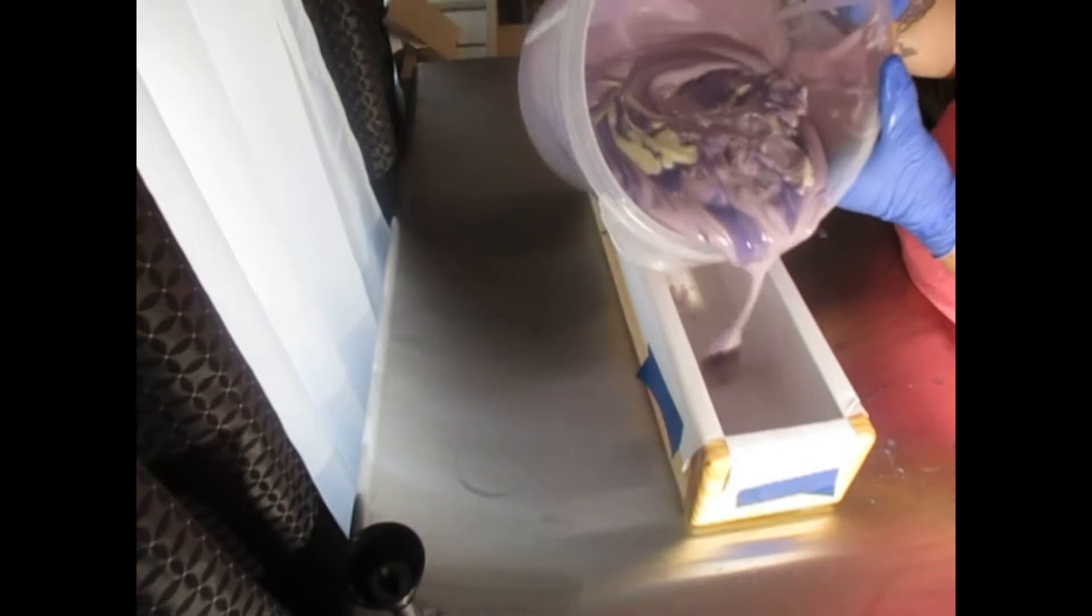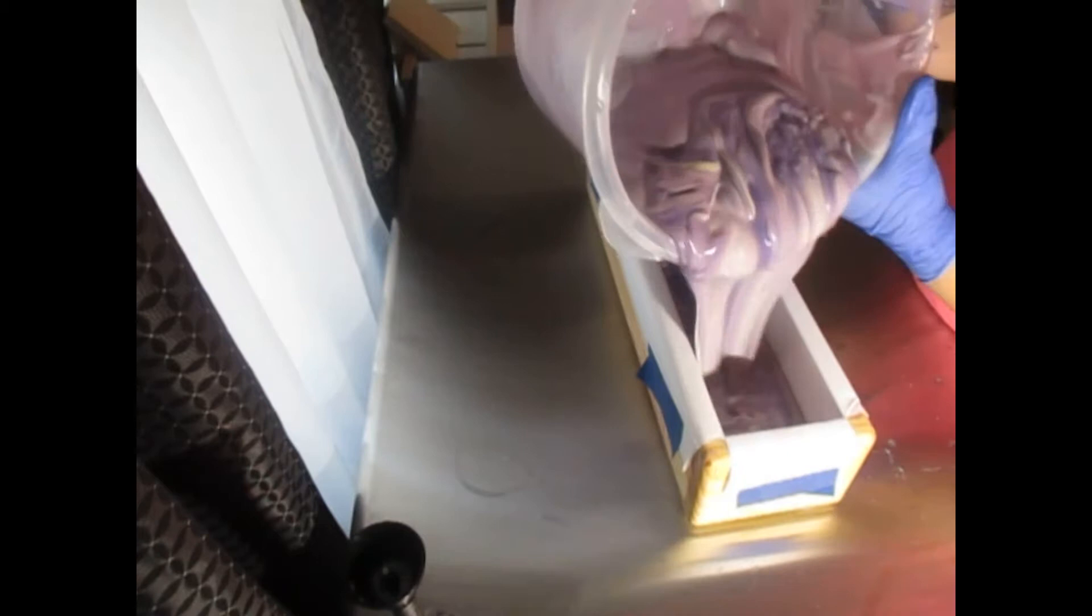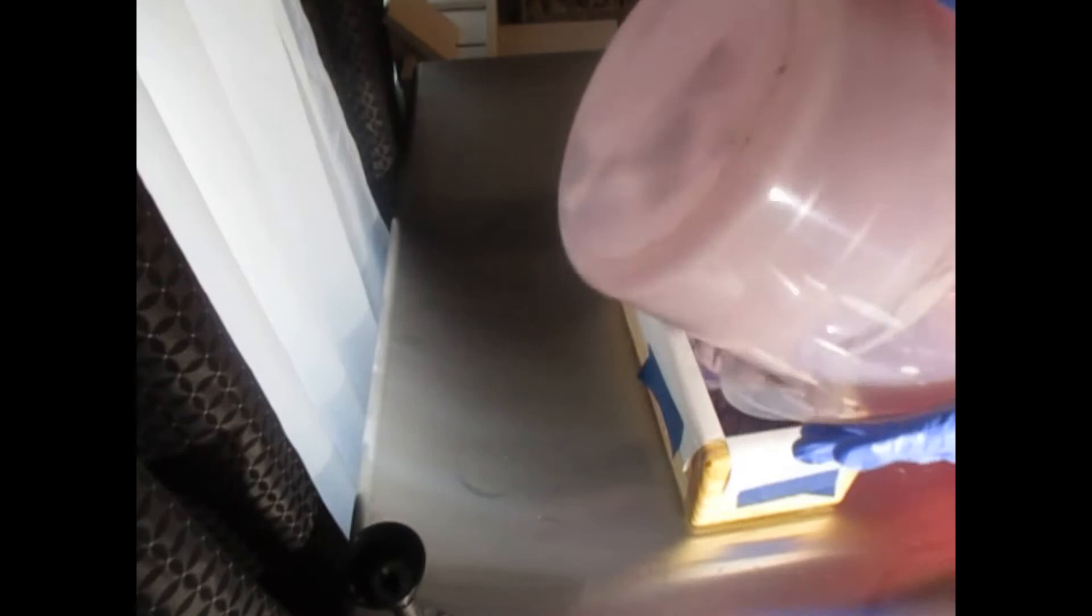And then we'll take it and start pouring it in the mold. Look how pretty that is. And it is starting to thicken up. Make sure I've got that in there. And grab my handy dandy spatula. Let's see how pretty. Look how pretty that is.